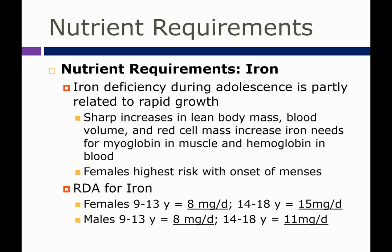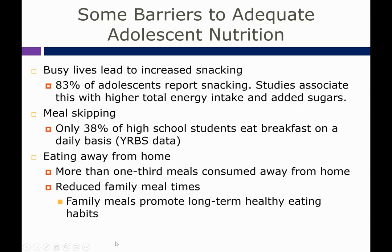Iron deficiency during adolescence is significant, partly due to rapid growth — sharp increases in lean body mass, blood volume, and red cell mass increase iron needs for myoglobin in muscle and hemoglobin in blood. Females are at highest risk because of the onset of menses: once a month females menstruate and have blood loss, which means iron loss. Both males and females need 8 mg per day from 9 to 13 years old, but from 14 to 18 years the RDA is 15 mg per day for females and 11 mg per day for males.